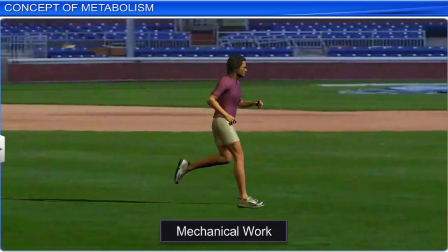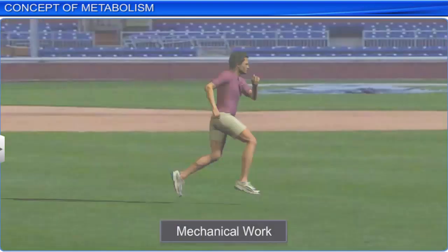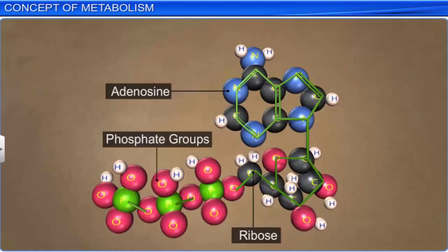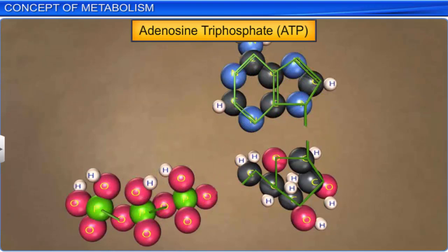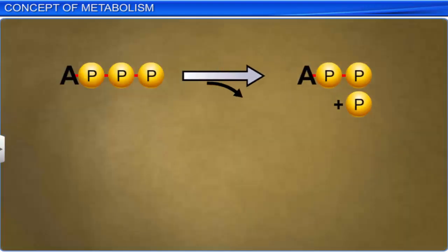The most important biomolecule that contains energy in its chemical bonds is adenosine triphosphate or ATP. When bonds of ATP break, a lot of energy is released. ATP also transports chemical energy within cells for metabolism.